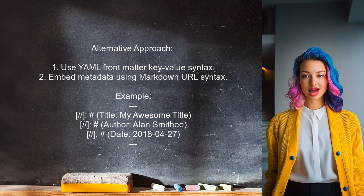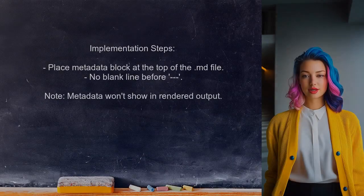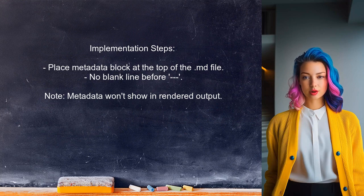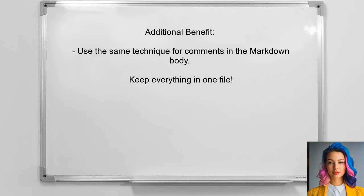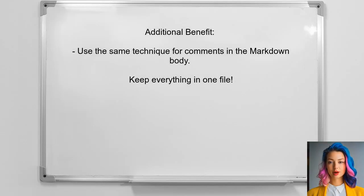One alternative approach is to use YAML front matter with a unique twist. This user suggests embedding metadata directly in your Markdown file using a specific syntax — place the metadata block at the top of your Markdown document, ensuring there's no blank line before the first three dashes. This metadata will not appear in the rendered HTML. Additionally, this technique allows you to add comments within the body of your Markdown document, keeping everything organized in one file.